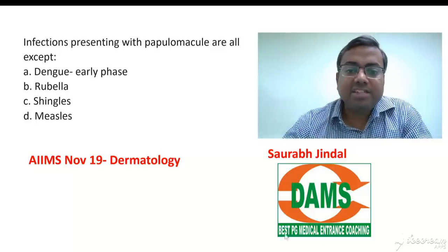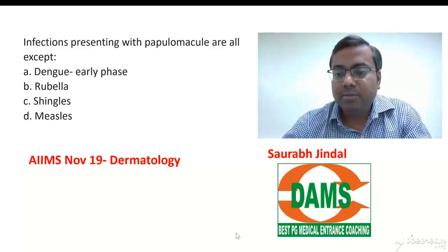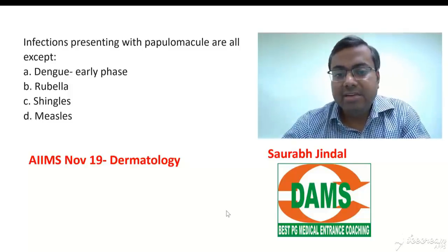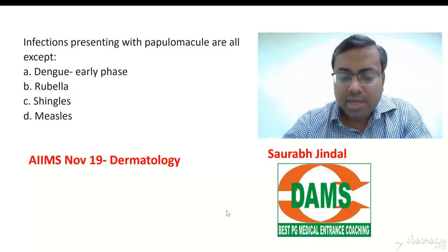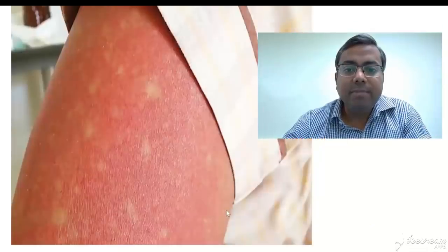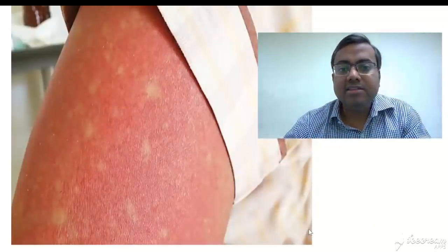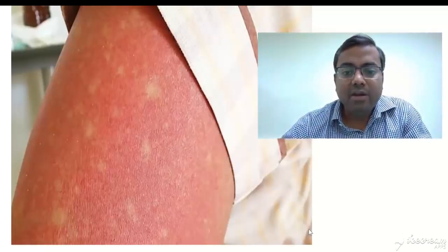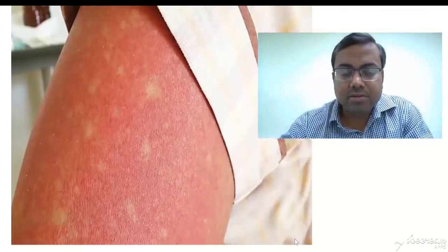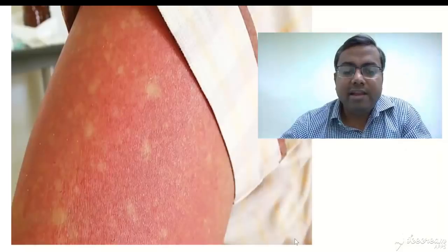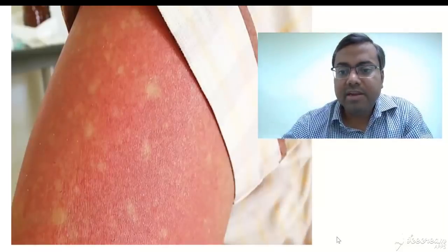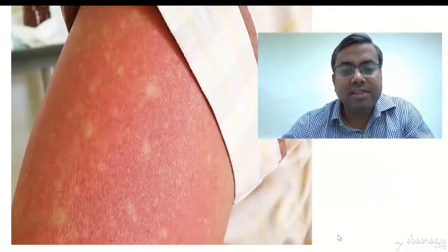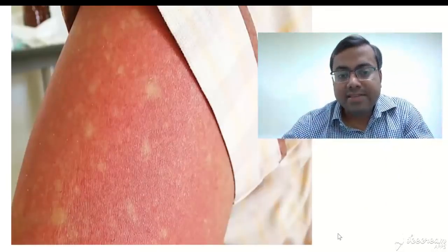Very typically this rash is described — and I believe this is an important MCQ point — as 'white islands in a sea of red.' You can see white spots in between with a background of erythema. This is called white islands in a sea of red, which is a typical second-phase dengue rash, and it will then subside on its own.